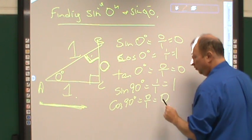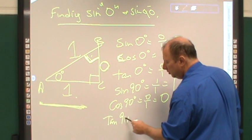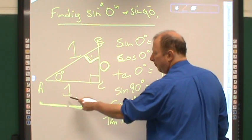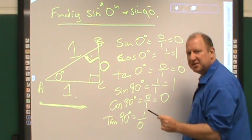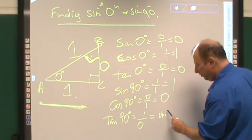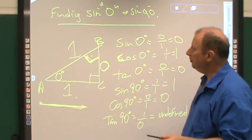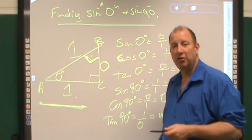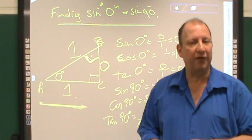And tangent of 90, which is opposite over adjacent, one over zero. And since you can't divide by zero, it's undefined. And here's your lesson on working with zero degree angle and 90 degree angle and trigonometric functions.